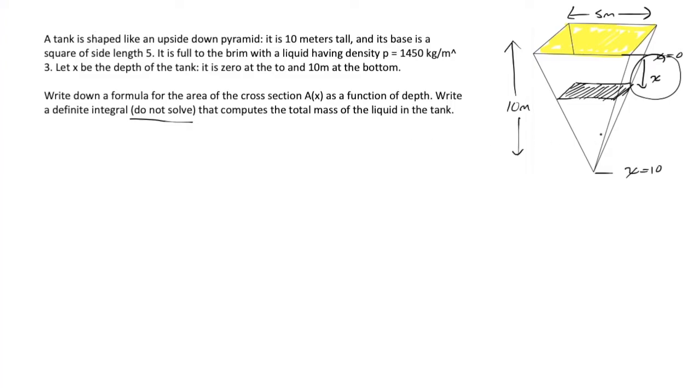Let's write down a formula for the area of the cross section. In order to do that, we need to find a way to relate the depth of the tank to the area of the square at that depth. What I want to offer up is a side-on view of this tank. It would look like a triangle.